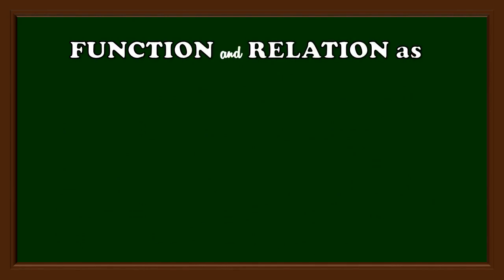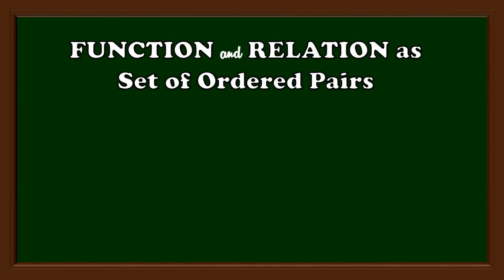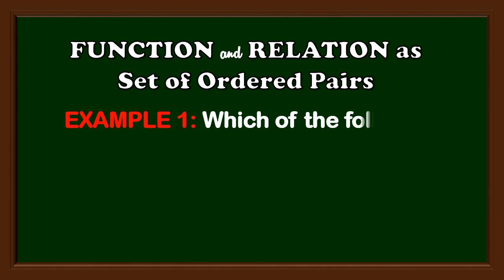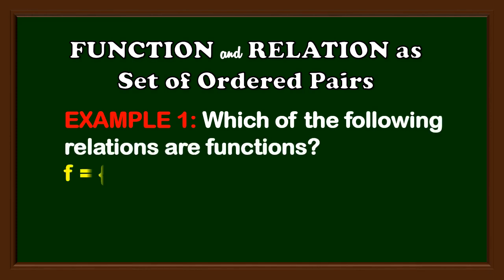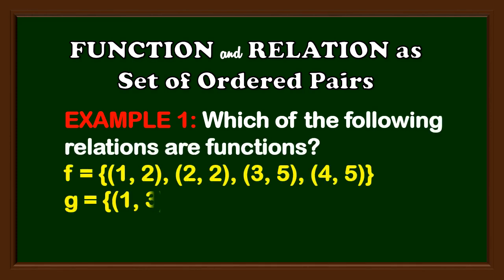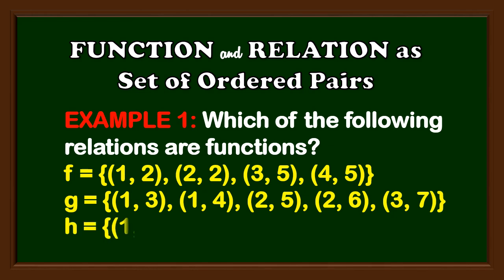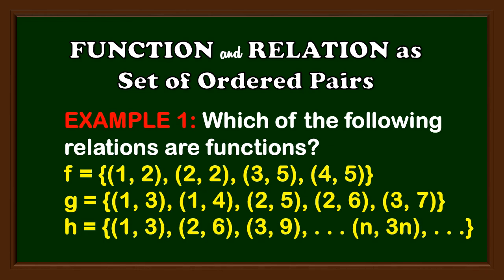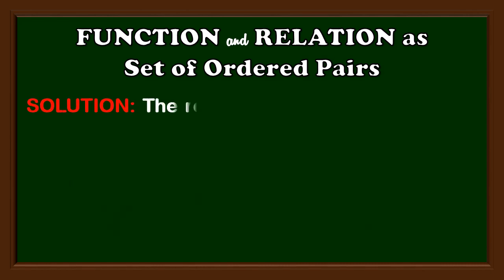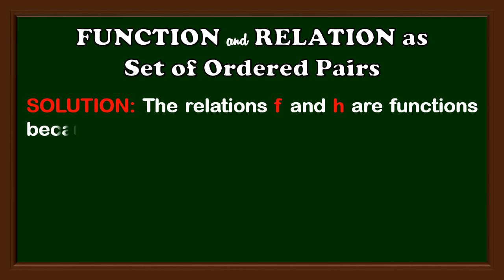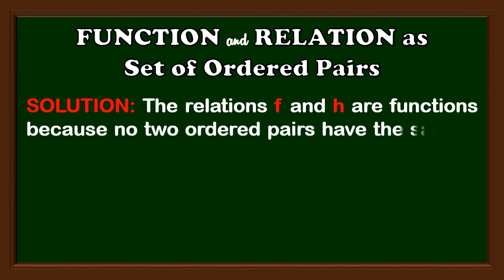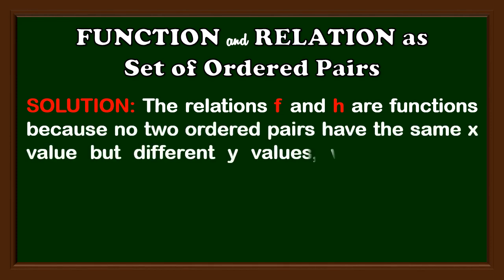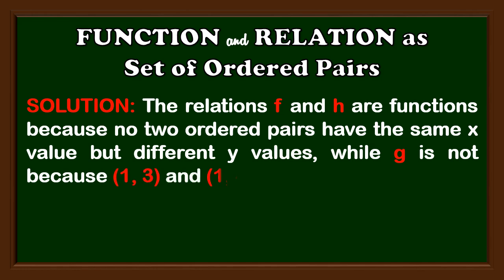Function and relation can be expressed as a set of ordered pairs. Let's take a look at Example 1: Which of the following relations are functions? For the solution, the relations f and h are functions, because no two ordered pairs have the same x value but different y values. While g is not, because (1,3) and (1,4) have the same x value.